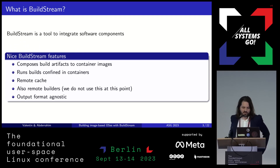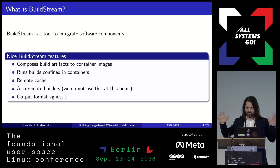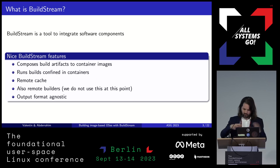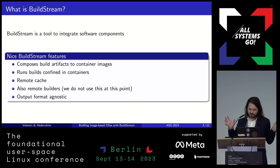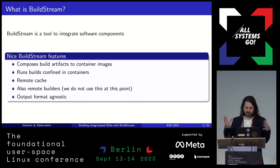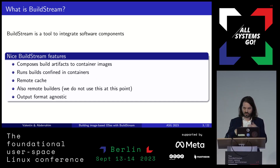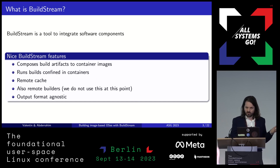First, what's Buildstream? Buildstream is a tool to integrate software components, so we have a lot of different pieces of software that we want to put together and build, and we describe some metadata that describes how to build everything. Buildstream composes build artifacts to build container images, and then we run these builds confined in those containers, so we can have a reproducible build, we can control exactly what the dependencies of every build are, and make sure that it's always the same file system.